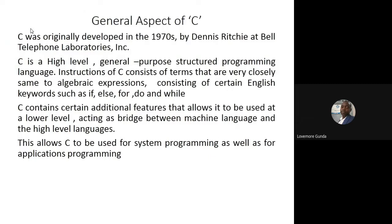The general aspects of C: C was developed in the 1970s by Dennis Ritchie at Bell Telephone Laboratories. It's a high level, general purpose, structured programming language. In C, the terms that we use are usually from our algebraic equations and expressions, and also English-like words. So we use words like if, else, for, do, while and so on. When you're writing your C program, you are using general English expressions.